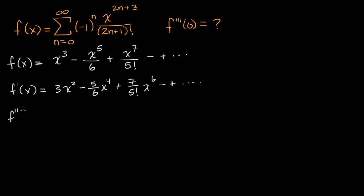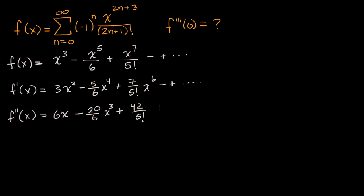The second derivative, f double prime of x, applying the power rule again, is going to be six x minus four times five over six, which I'll write as 20 over six x cubed, plus six times seven — so 42 over five factorial x to the fifth — and we keep going, alternating signs on and on forever.